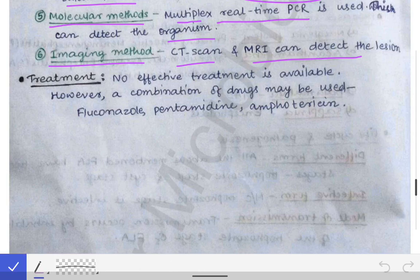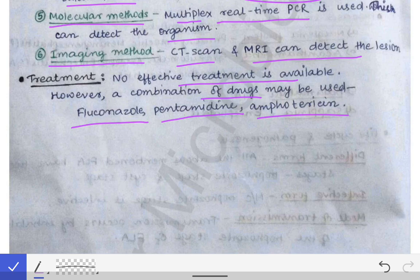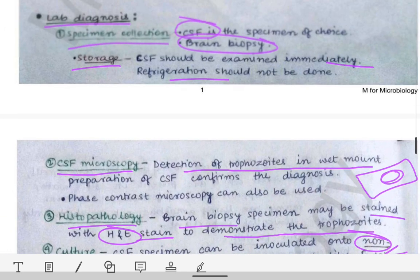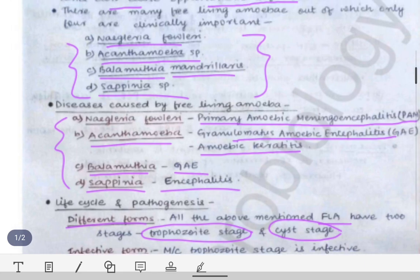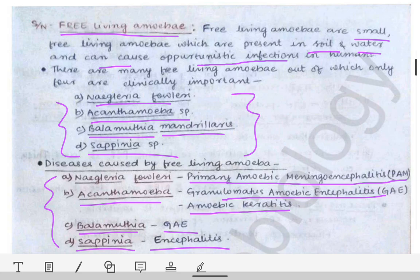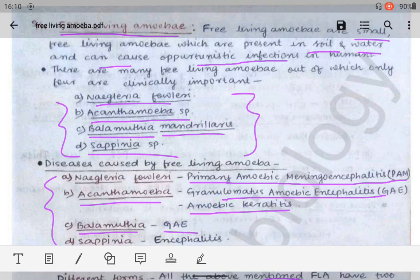Death is certain in these infections because no effective treatment is available for free-living amoeba infections. However, a combination of drugs is given, including fluconazole, pentamidine, and amphotericin B. This is all about free-living amoeba, which is sometimes asked as a short note in university exams — these organisms cause CNS infections and are important to know.